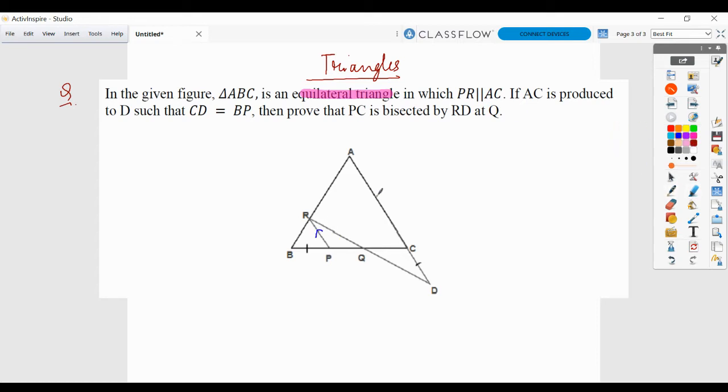So PR is parallel to AC and it's an equilateral triangle. So all the sides are equal to each other and all the angles are equal to each other.